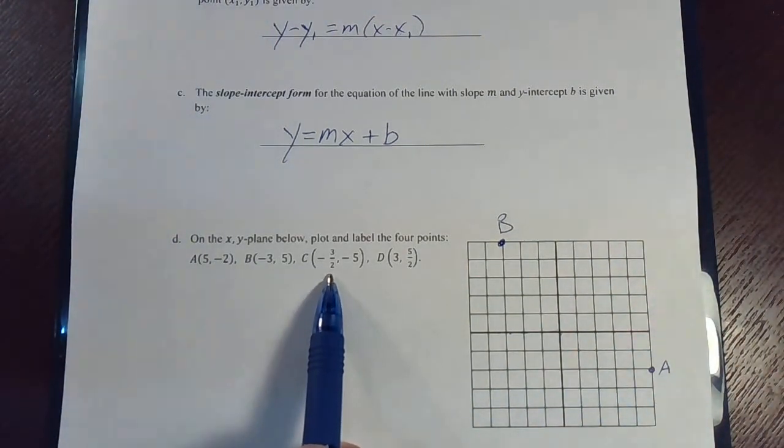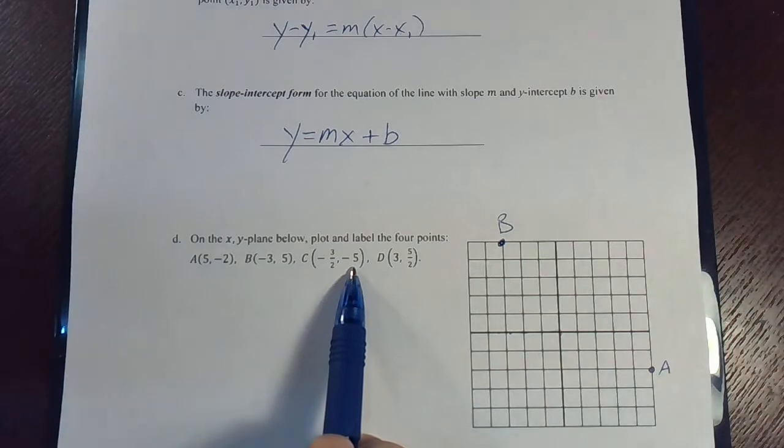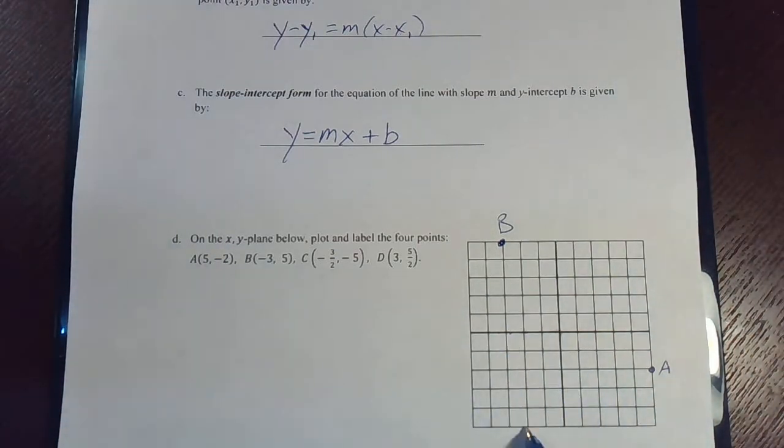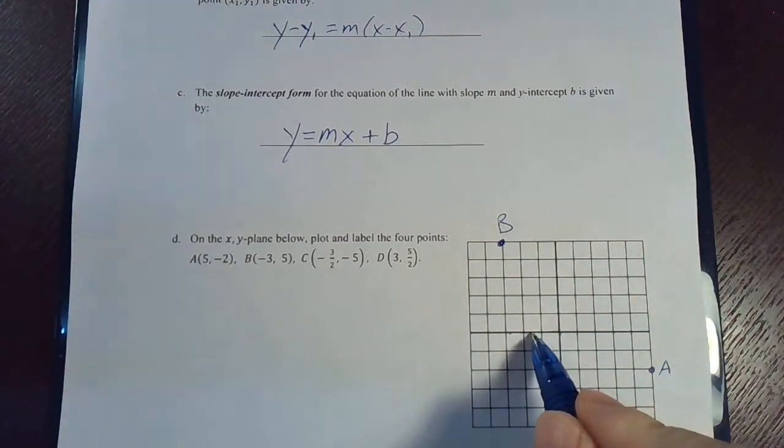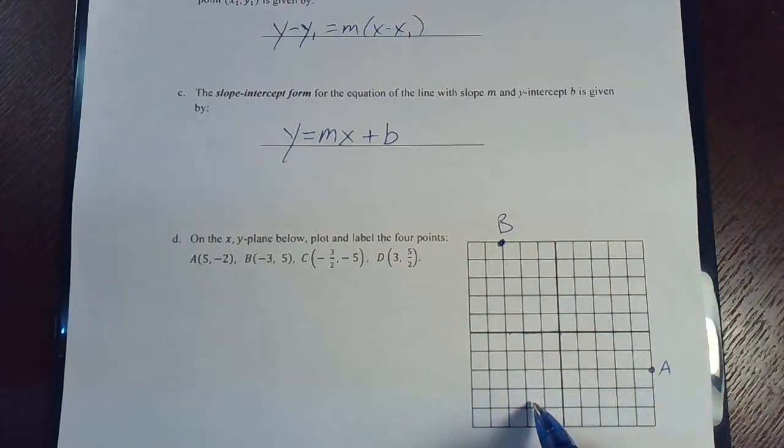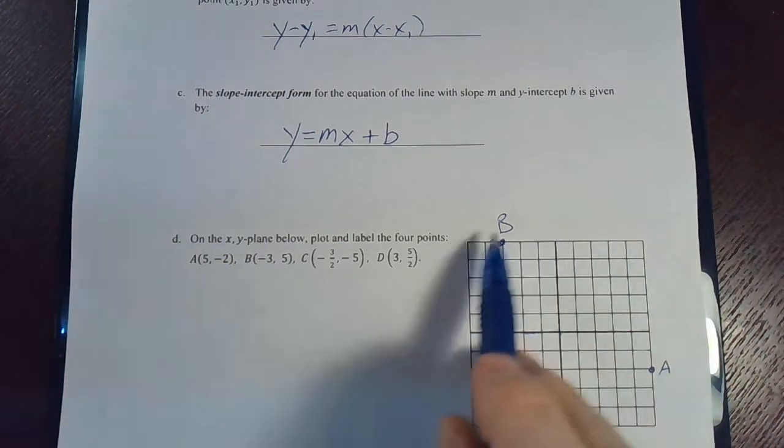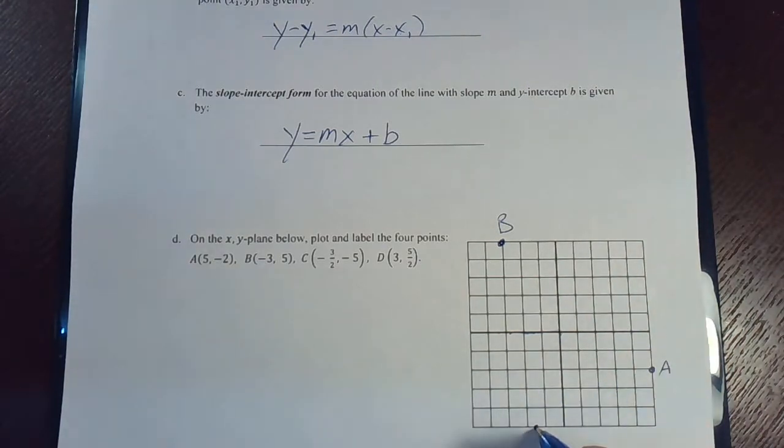Point c is negative three halves comma negative five. So we're going to go left and down. We're going to go down three halves, which is like one and a half. So one would be right between these two points here. And then we've got to go down five. Right there. A lot of these are ending up on the border because they have a five in them. So this would be point c, where we went negative one and a half and down five.